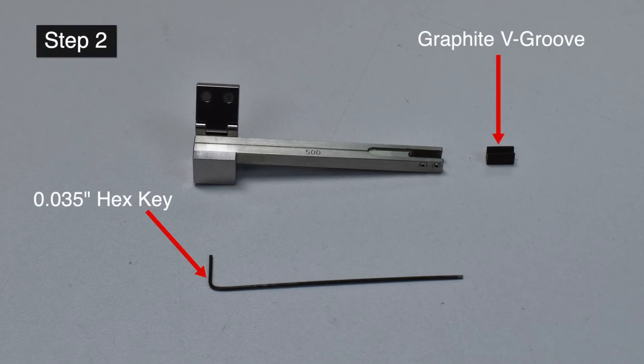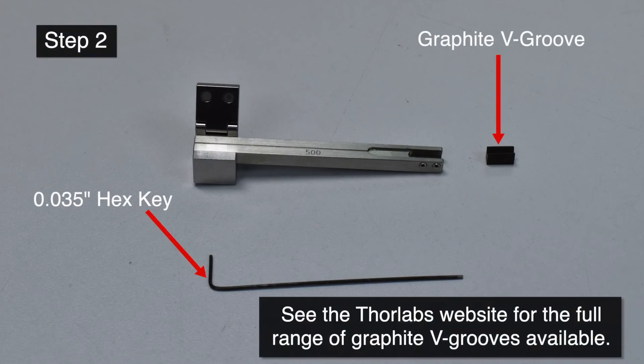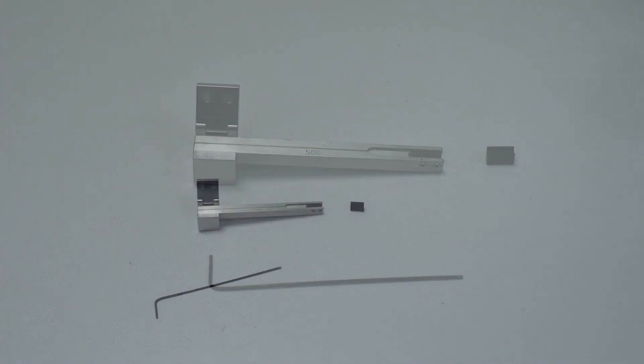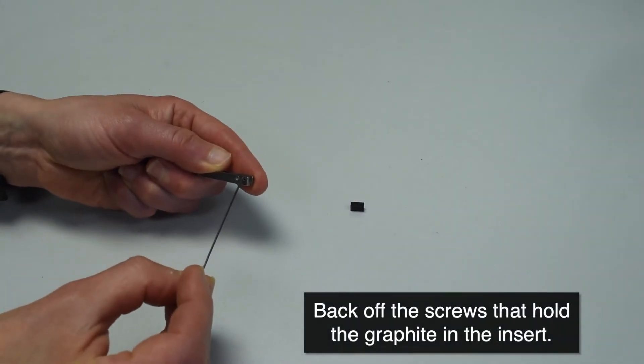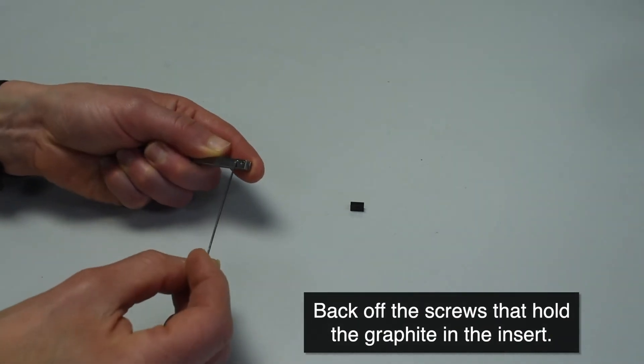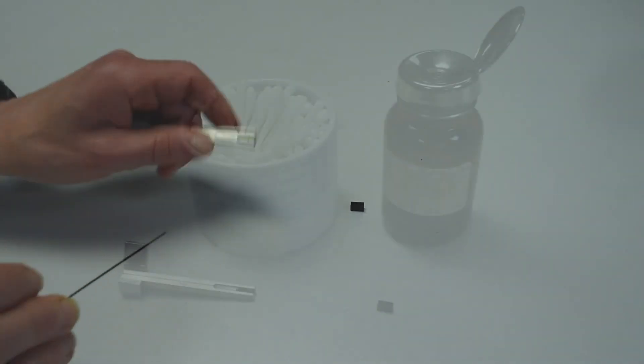The next step is to fit a graphite V-groove into the slot in the transfer insert. This supports the fiber during splicing. Either the fiber's cladding or its coating can be in the graphite. First, back off the screws that hold the graphite in place. They should not protrude from the metalwork on the inside of the slot.